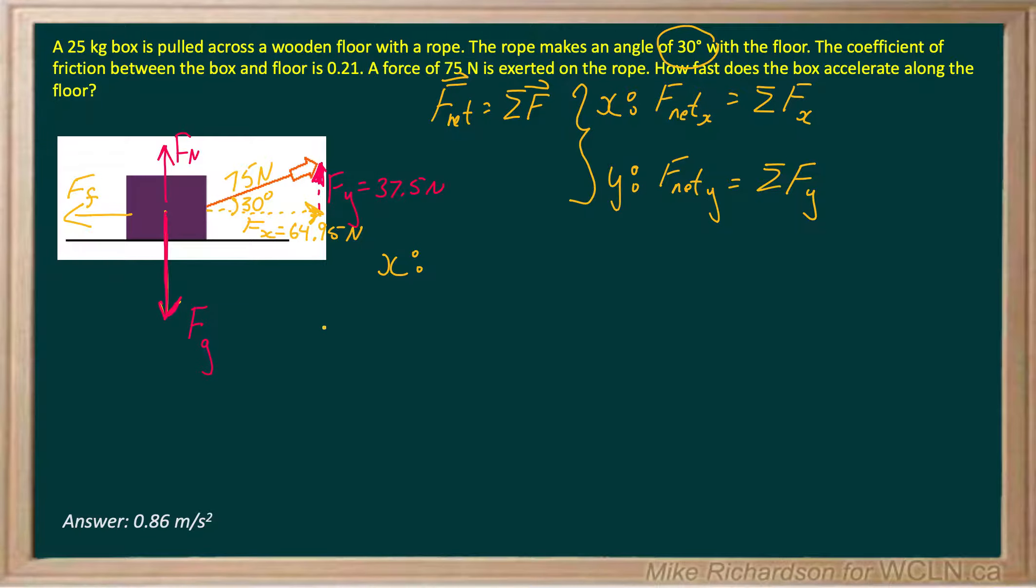So we're doing the x direction. My net force in the x will be Fx, which is going with the motion, so that's positive, minus force of friction. And it's subtracted because it's going against the motion. In other words, my overall force in the x, when I cancel those two off, will be to the right. Fx minus F friction.